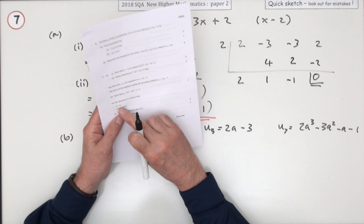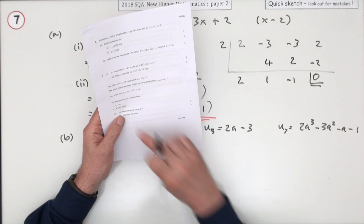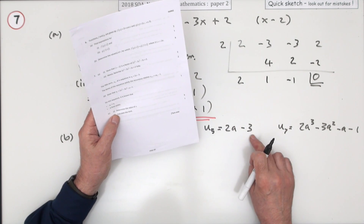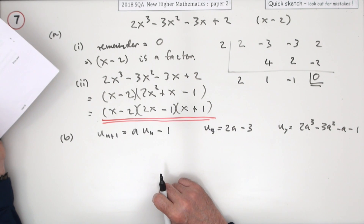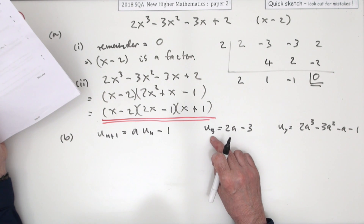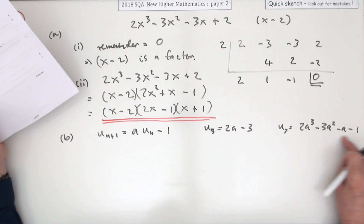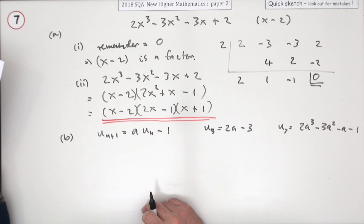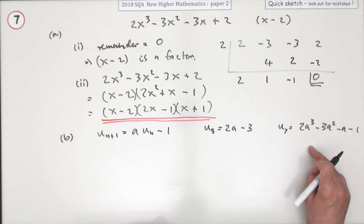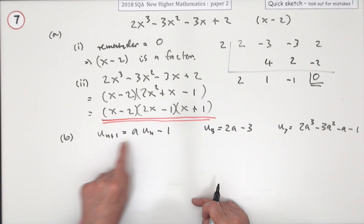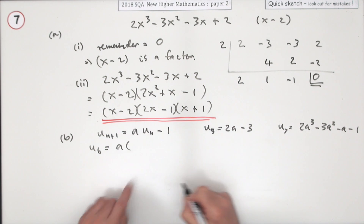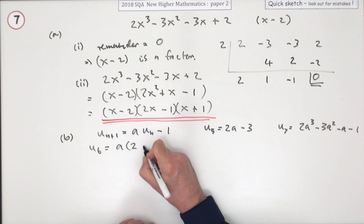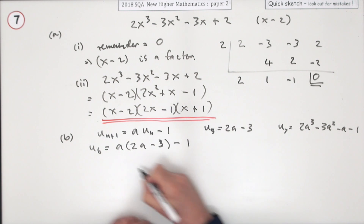Now part b switches tack to the recurrence relation. It says the fifth term of this sequence is 2a minus 3. The sequence is given by this recurrence relation, and you don't know that multiplying coefficient. You have to show that if that's the fifth term, the seventh term is given by a certain expression. That just means working your way up — the recurrence relation tells you to work out the following one. So u6 will be a times u5, which is 2a minus 3, minus 1.